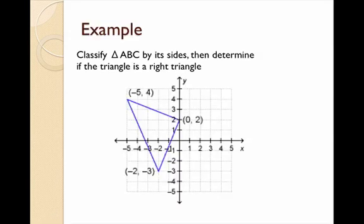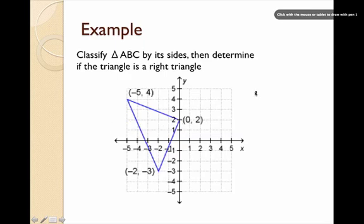Now we're going to learn how we can put this into use and figure out what type of triangle we have. We have triangle ABC drawn on our diagram. We want to figure out what type of triangle it is by its sides — is it scalene, equilateral, or isosceles? And then we're going to figure out if it is a right triangle. To do this we need to find the length of each segment using the distance formula.